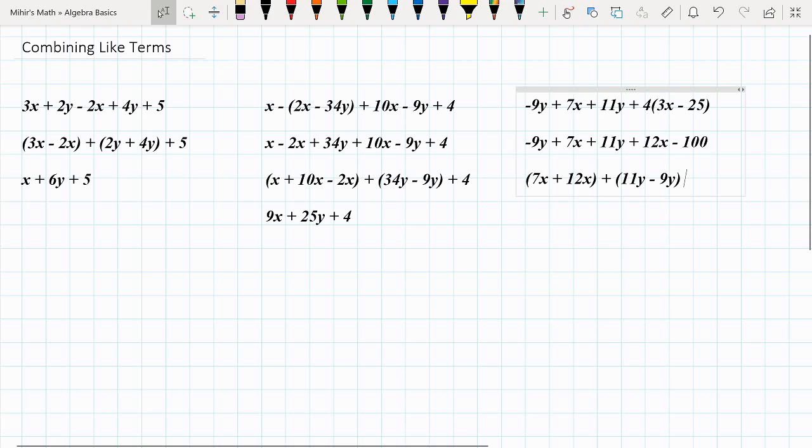And then our only constants are minus 100. So if we add these all up, we get 19x plus 2y minus 100. So everybody, that's it for combining like terms, and I'll see you in the next video.